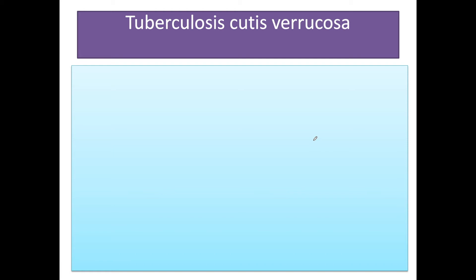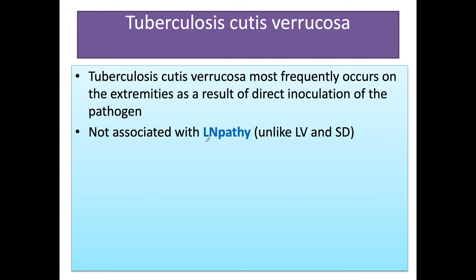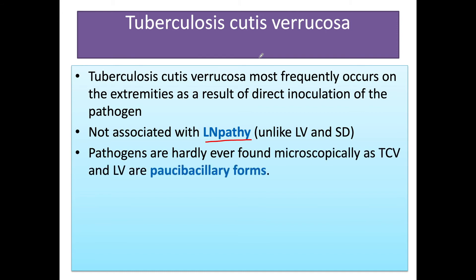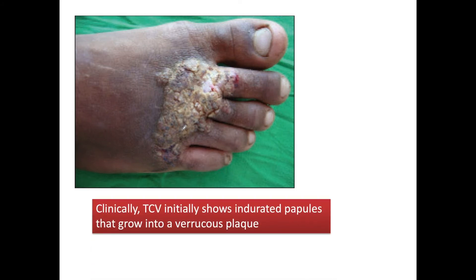The next entity is tuberculosis cutis varicosa. It most frequently occurs on the extremities as a result of direct inoculation of the pathogen, and is not associated with lymphadenopathy. This is an important point — lupus vulgaris and scrofuloderma present with lymphadenopathy, but not tuberculosis cutis varicosa. The pathogens are hardly ever found microscopically as tuberculosis cutis varicosa and lupus vulgaris are both paucibacillary forms. The clinical picture shows a large wart-like, indurated lesion over the foot.